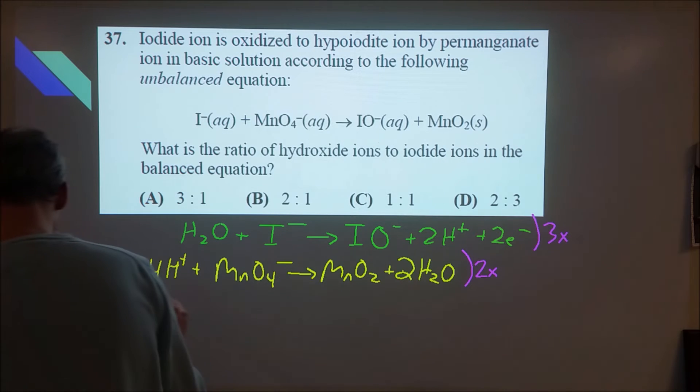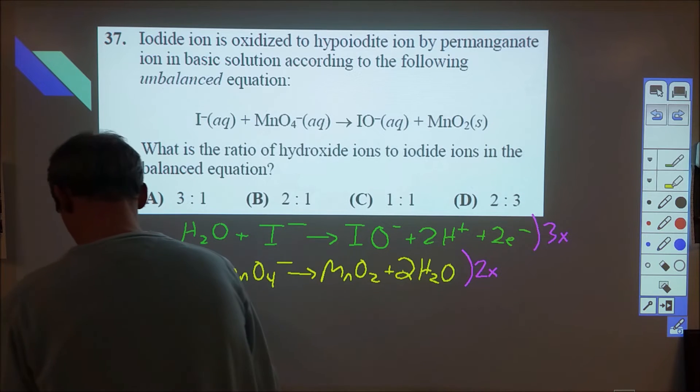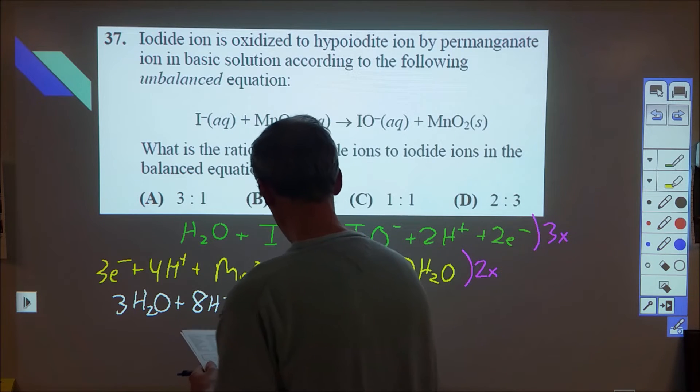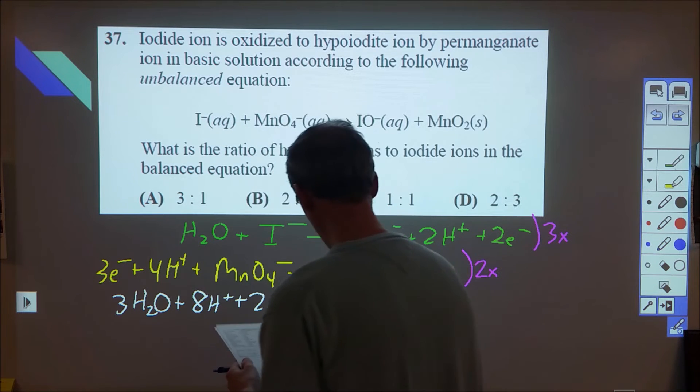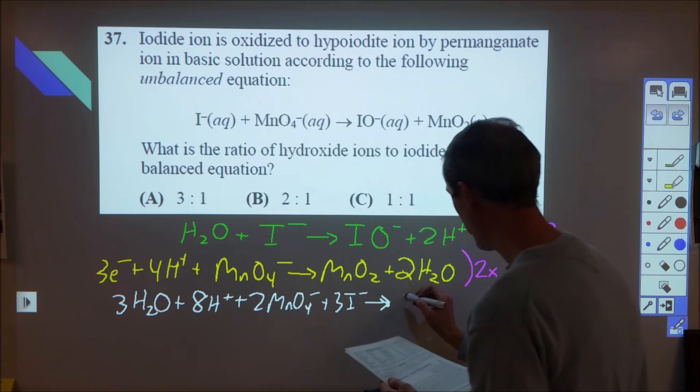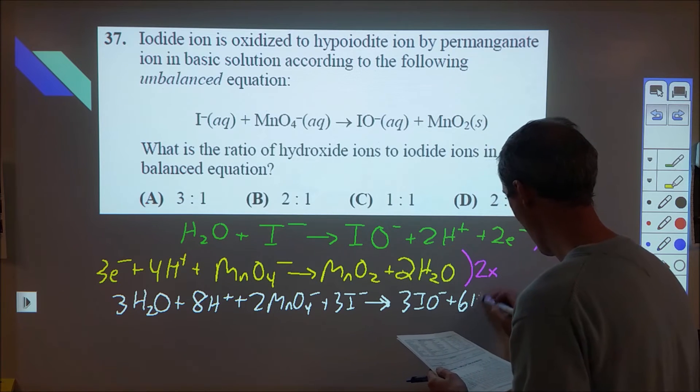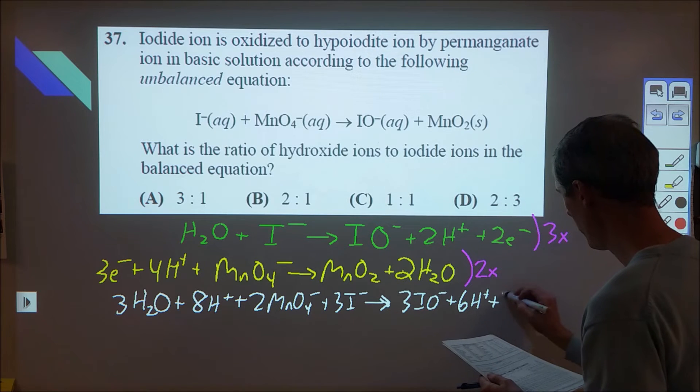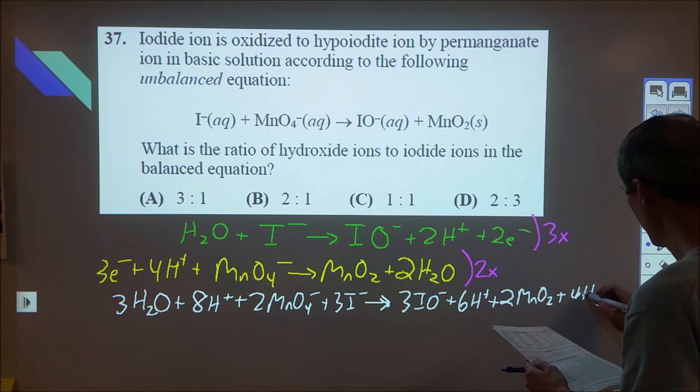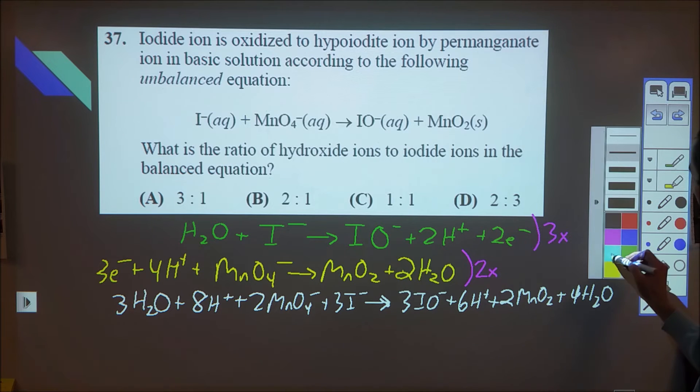And so we're going to go ahead and combine those, and that gives us this reaction, which is three water plus eight H plus plus two permanganate plus three iodide. It yields three hypoiodide plus six H plus plus two MnO2s plus four water. Okay, so now we're making some progress on this, and now the last thing we need to do is kind of make this a little workout. So we're going to start by canceling some things.